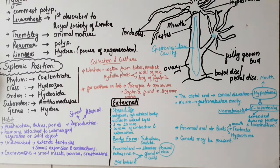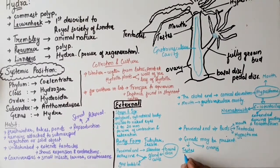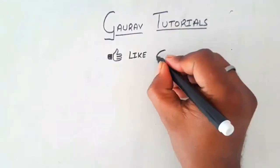We can see gonads, which are of two types: testes and ovaries. Testes are located near the oral end and are usually conical in shape. Ovaries are located at the proximal end and are oval in shape.